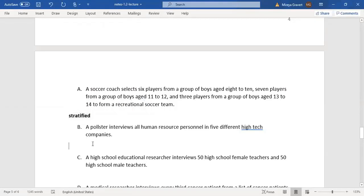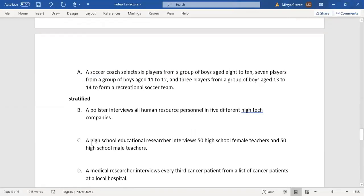B: A pollster interviews all human resource personnel in five different high-tech companies. The sample is all the personnel in those five high-tech companies, so the population would be all high-tech companies. In this case, they're choosing five out of all tech companies, so this would be cluster.